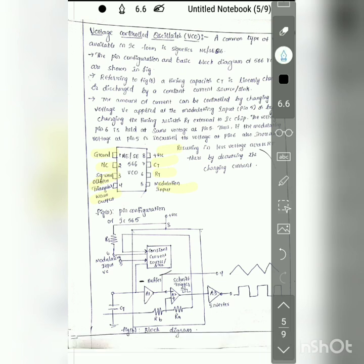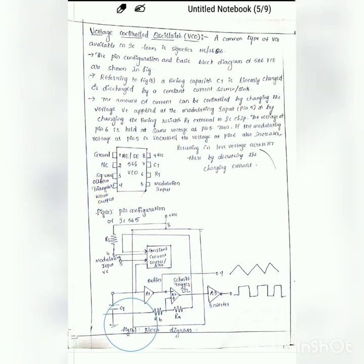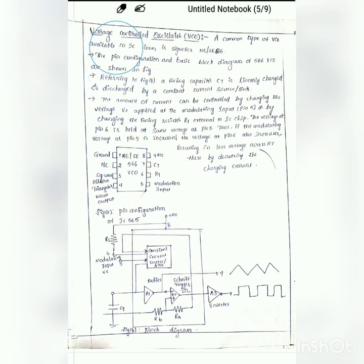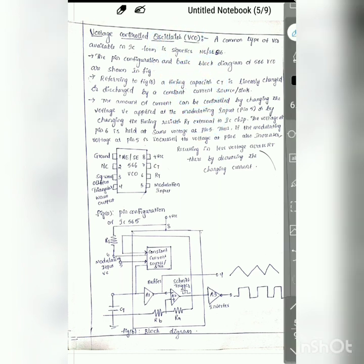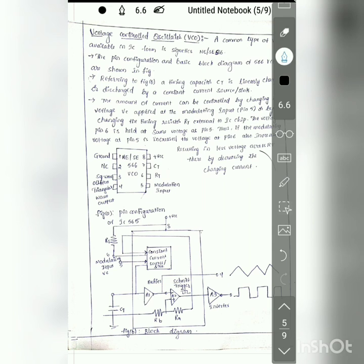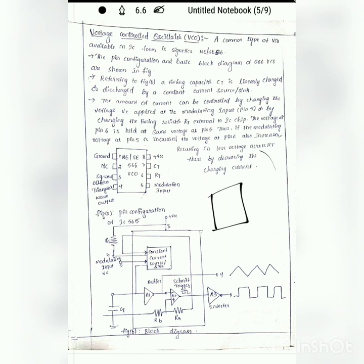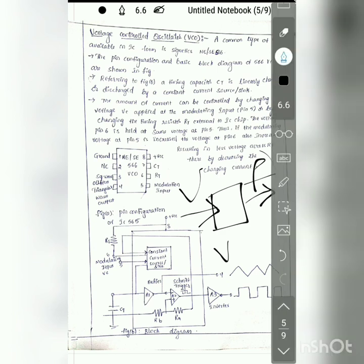This is the block diagram of the VCO. Normally an oscillator is a circuit that generates a waveform without any input. Similarly, the voltage controlled oscillator generates a waveform whose frequency is proportional to the voltage applied at the input — that is why it is called a voltage-controlled frequency generator, or voltage-to-frequency converter.